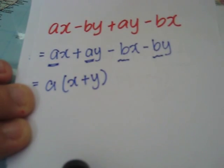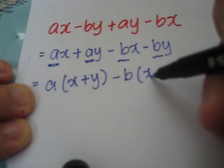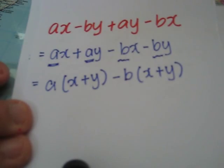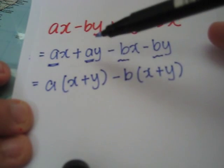The common factor over here would be negative b. And we get this. Let's check. a times x gives us ax. a times y is ay.